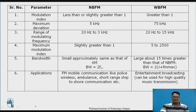For bandwidth, in narrow band it is approximately equal to that of AM, given by bandwidth equals twice of FM, where FM is the maximum frequency. For wide band it is greater than narrow band — up to 15 times greater — given by bandwidth equals twice of (Δf + F_max), where Δf is the frequency deviation. Applications for narrow band FM include FM mobile communication like police, wireless, ambulance, short range ship-to-shore communication. Wide band is generally used for broadcasting for entertainment purposes and high quality music transmission.